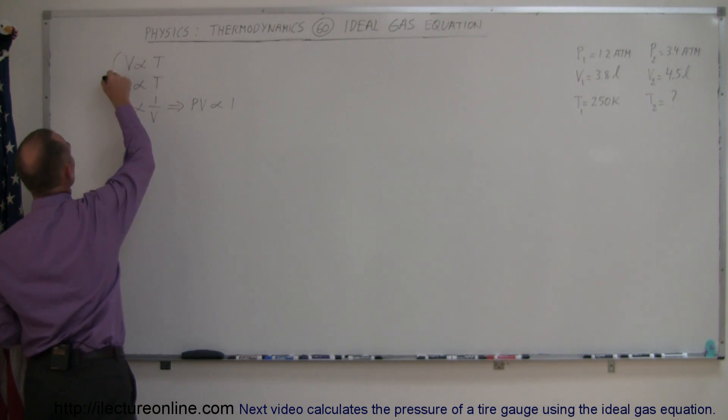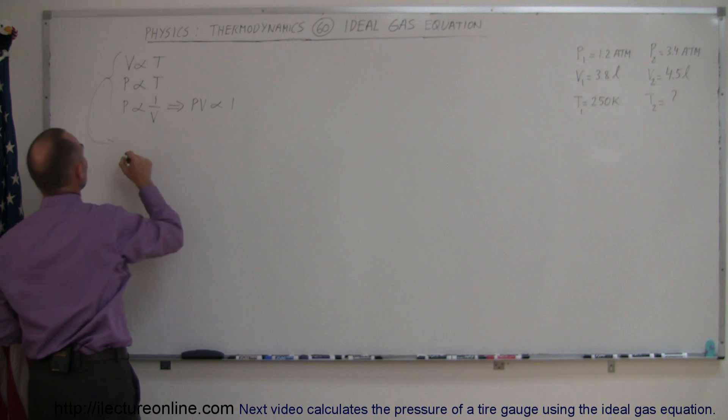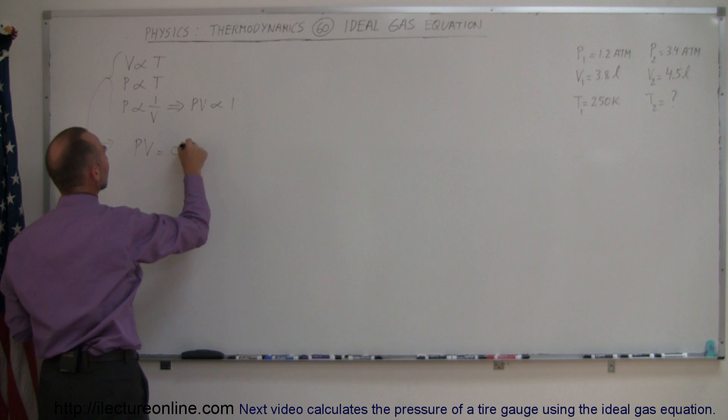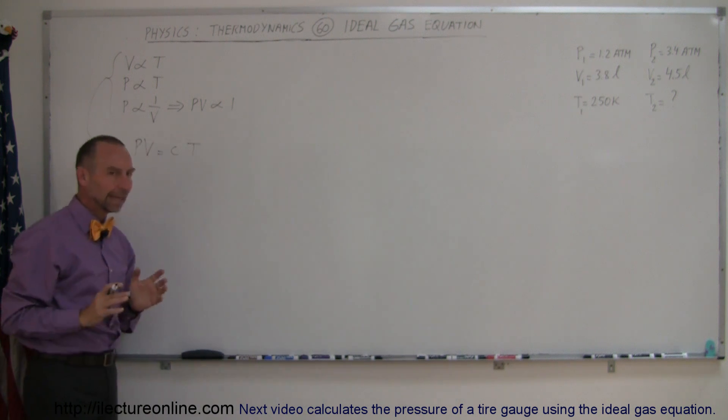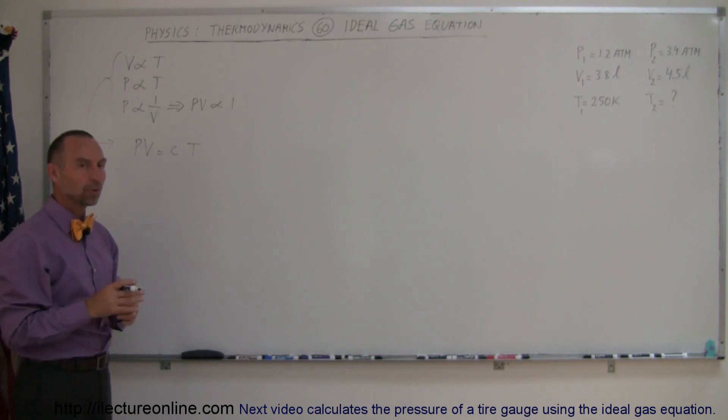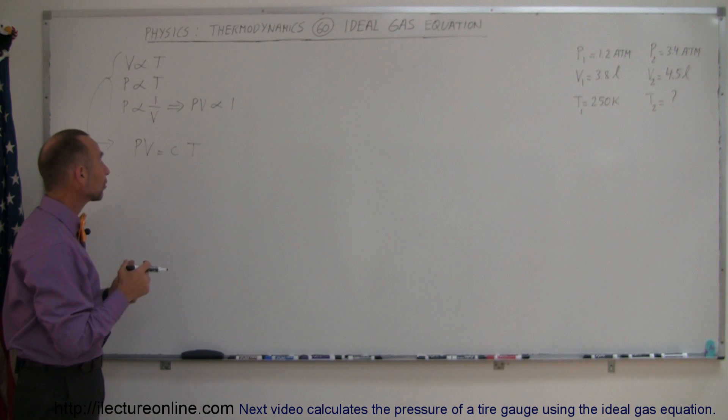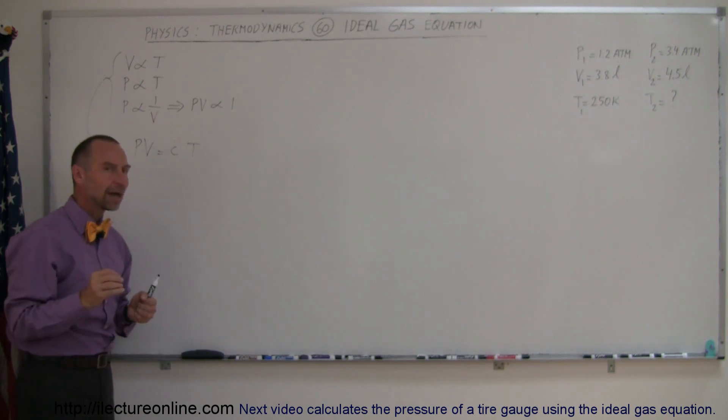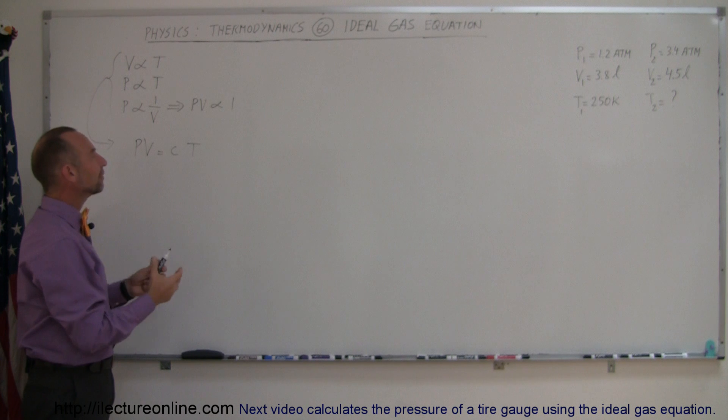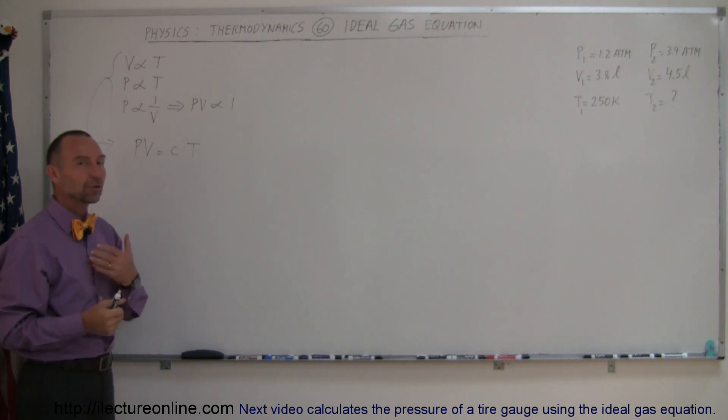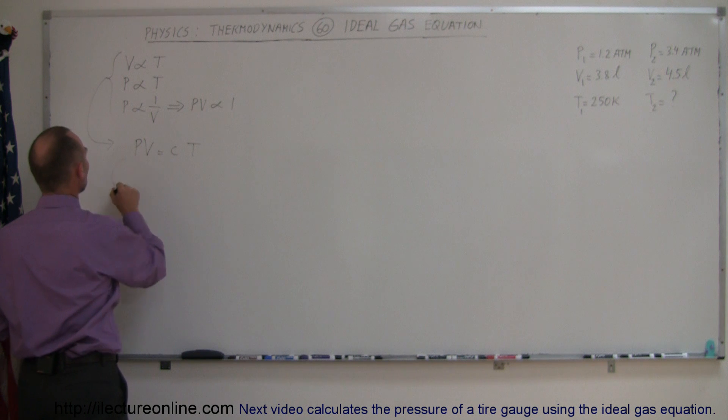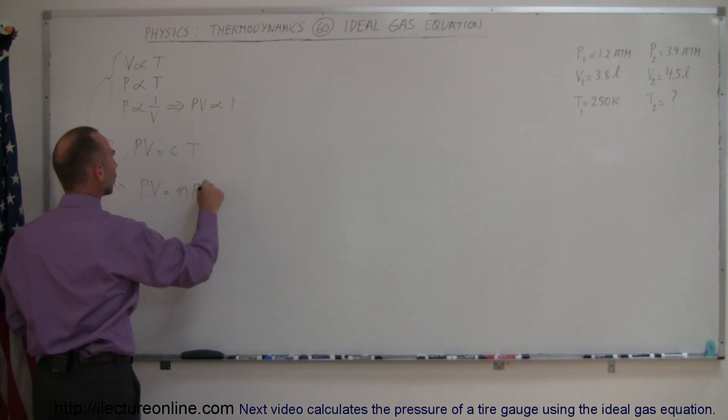If we then apply all that into a single equation, we can say that these three combined mean or indicate that the pressure times the volume is equal to some constant times the temperature. And it turns out that constant proportionality is known as the gas constant R. And we also have to account for the amount of gas that we have in our sample, so we have to throw in there the number of moles of the gas.